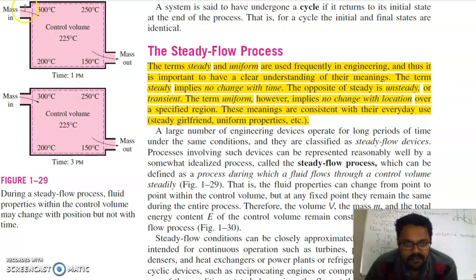The term steady implies no change with time. You can take an example of this container here. The mass will come into the container and mass will go out. At 1 PM, the temperature is 300 here, 250 at this point, 225 here, and 150 at this point. But after two hours—at 3 PM—if you measure the temperature here, it remains the same: 300 degrees Celsius. Here it remains 225, here it remains 150. Something is still flowing through this control volume, but the temperature at the locations is the same as the previous temperature at the same locations. So the term steady implies no change with time.